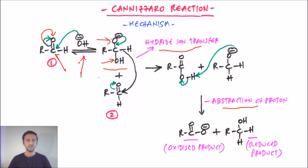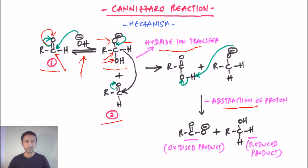In the second step, this anion reacts with the second mole of aldehyde. The lone pair on the O⁻ shifts to form a double bond between carbon and oxygen. This makes the carbon pentavalent and therefore unstable, so one bond must break. The hydrogen, along with its bonding electrons — the hydride ion (H⁻) — transfers to the carbonyl carbon of the second aldehyde molecule, causing the pi bond electrons to shift onto that oxygen.